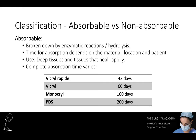Absorbable sutures are broken down by the body by an enzymatic reaction or hydrolysis. The time in which this takes place varies between different materials, the location of the suture, and patient factors. Absorbable sutures are commonly used for deep tissues and for tissues that heal rapidly. As a result, they may be used in small bowel anastomosis, suturing in the urinary or biliary tracts, or for tying off small vessels near the skin.